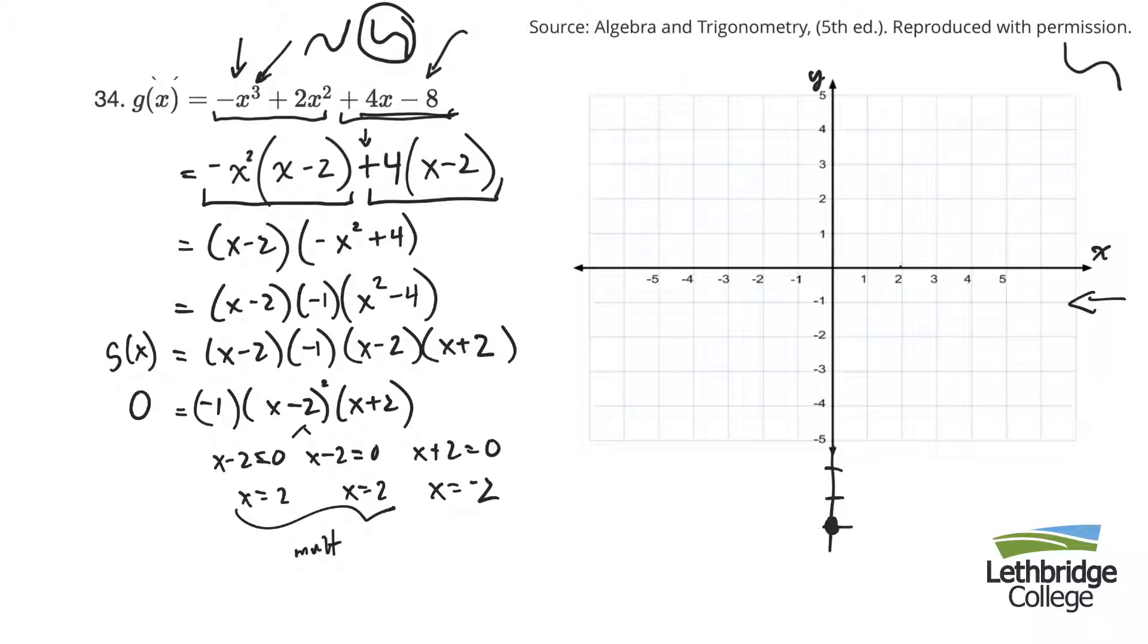So I have 2 with a multiplicity of 2. So an x-intercept of 2, and something funky happens there. The book doesn't show you to put a circle there, but I just do that just to remind myself that something happens there. And I have another x-intercept of minus 2.